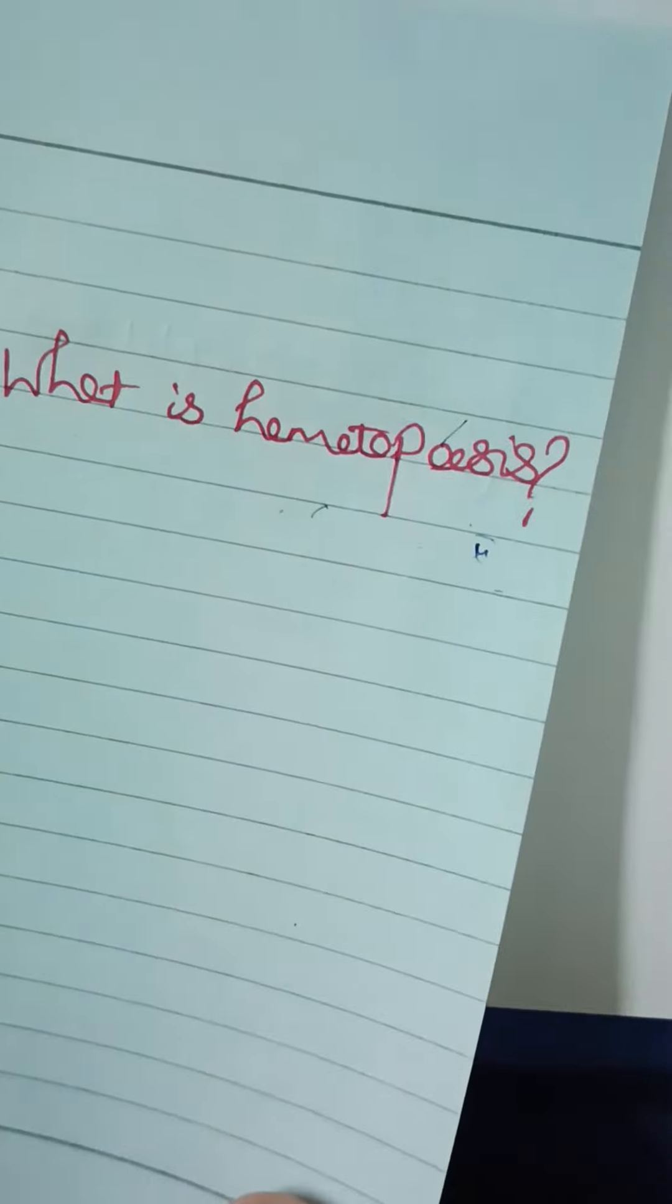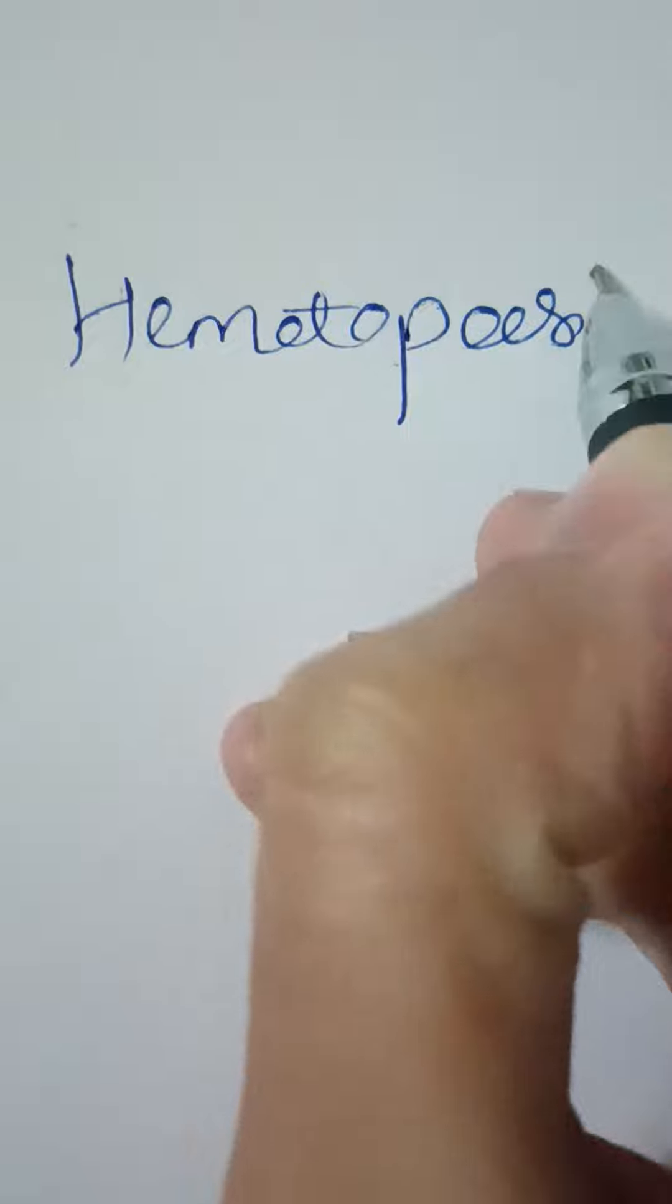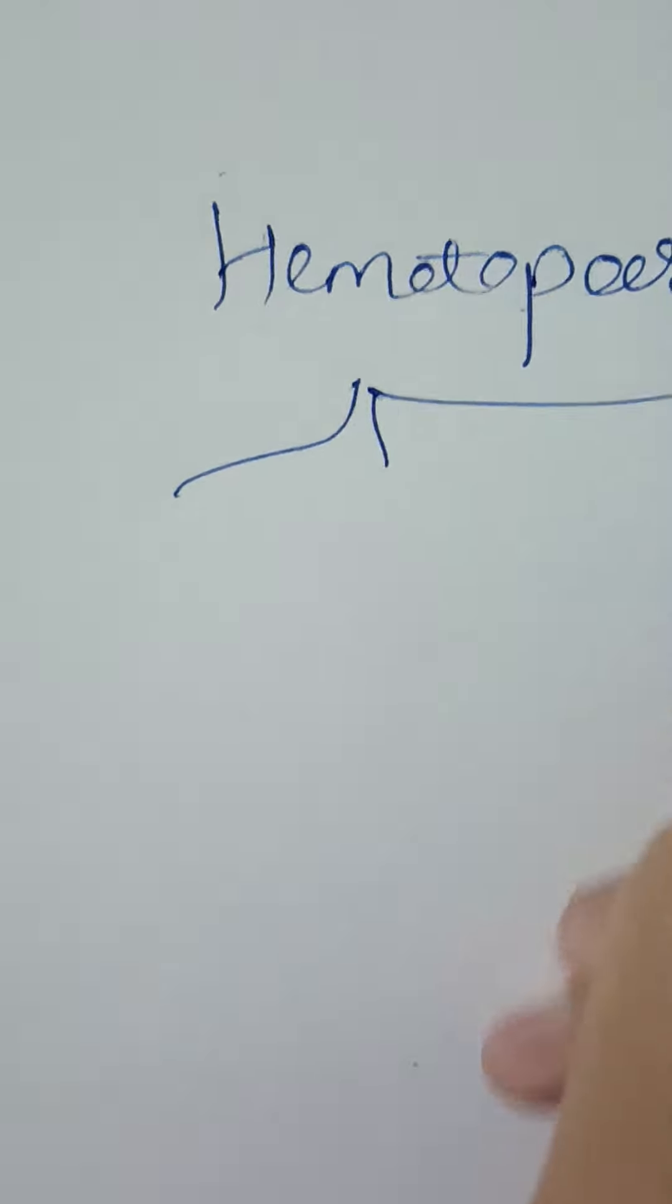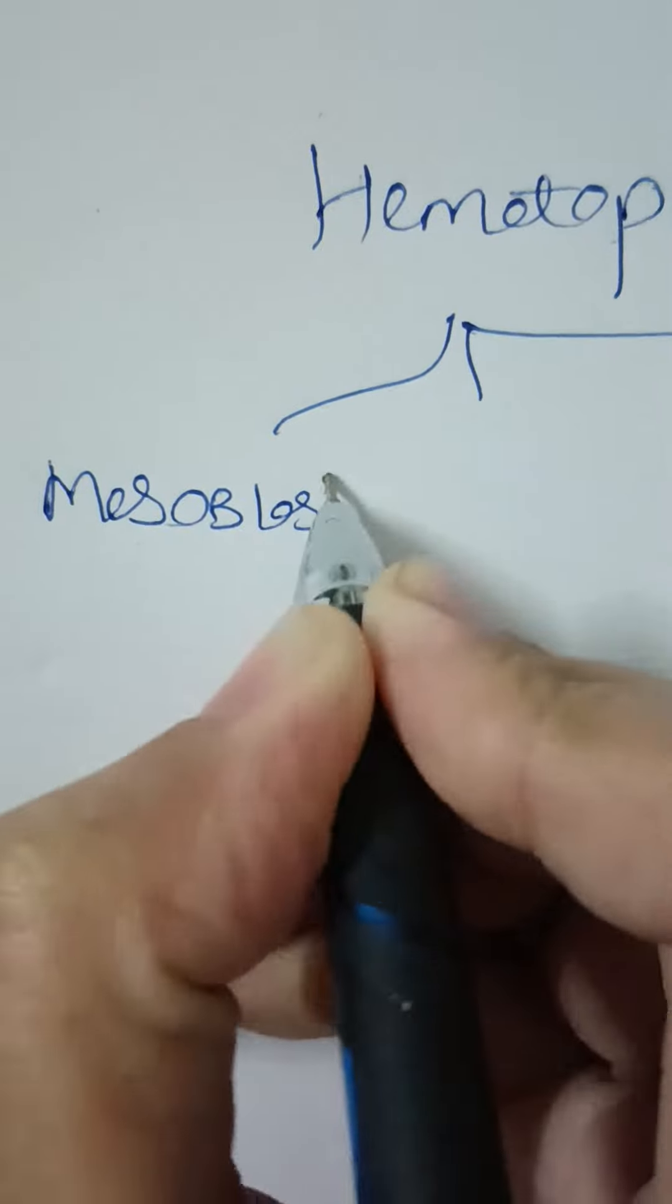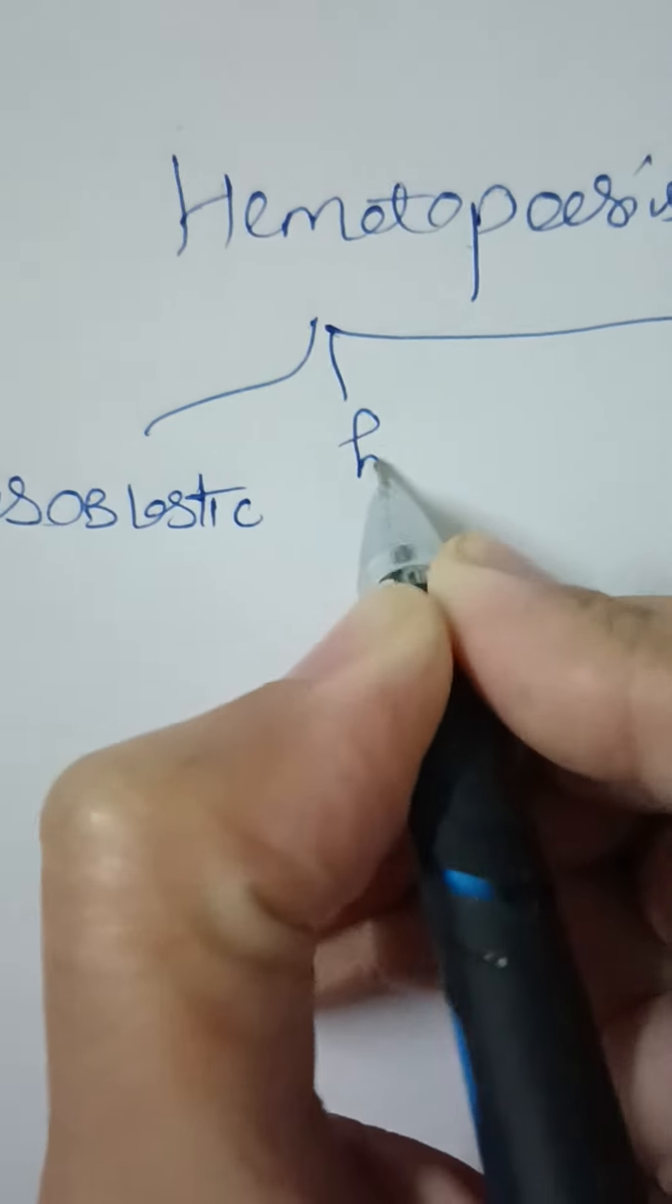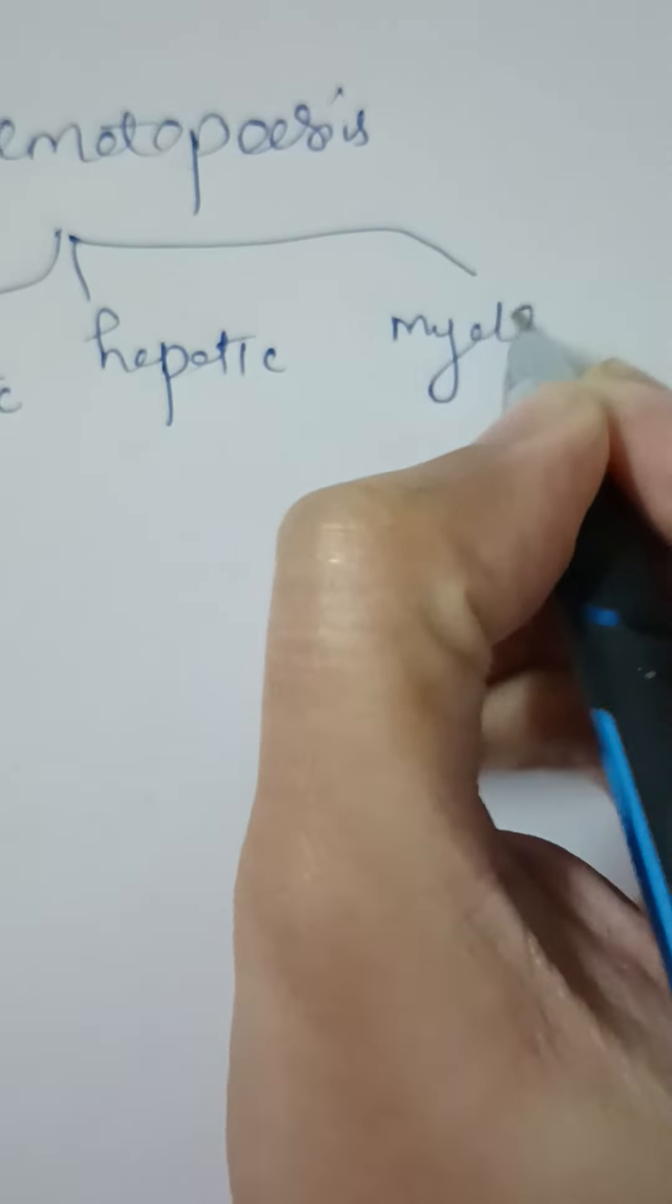So next, what are the stages of hematopoiesis? Hematopoiesis has three stages: mesoblastic, hepatic, and myeloid.